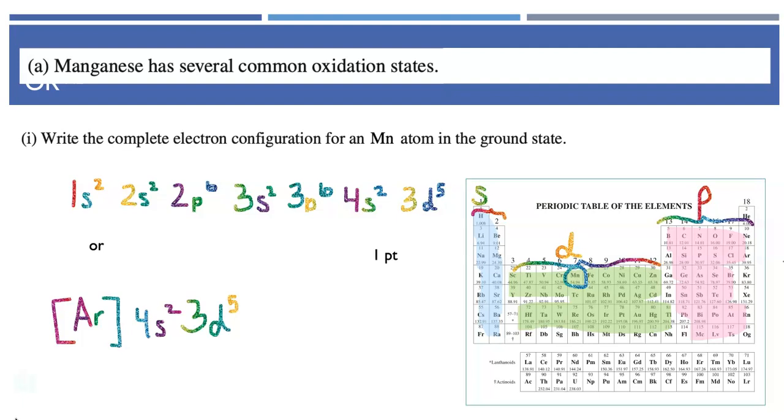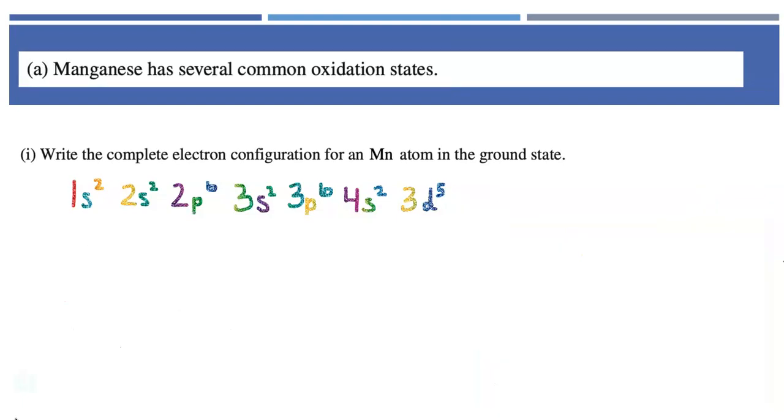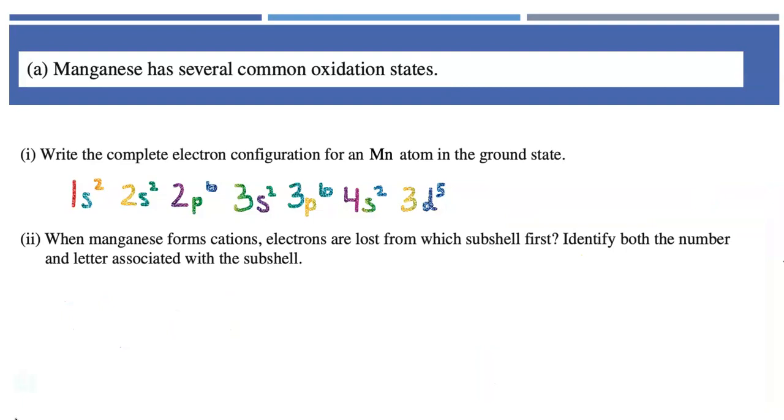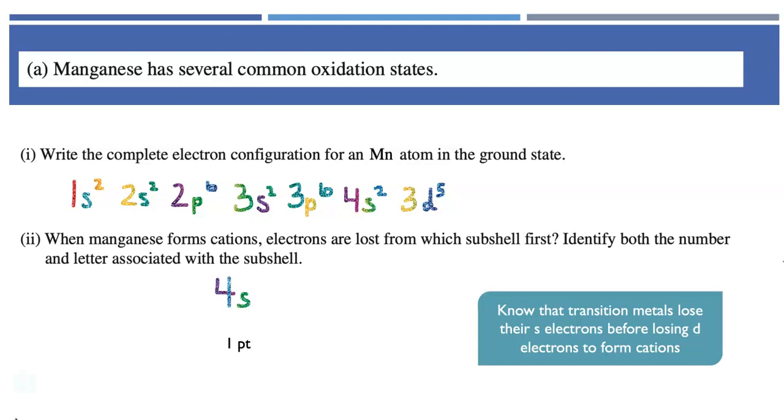Part two of part A says, when manganese forms cations, electrons are lost from which subshell first? Identify both the number and letter associated with the subshell. You just need to answer the question. The answer is 4s, and that was worth one point. It's important to know that transition metals are always going to lose their s electrons in their highest occupied energy level before they lose the d electrons when they're forming cations. You're always going to lose the 4s before you lose the 3d. This is part of the reason why transition metals can form multiple cations.